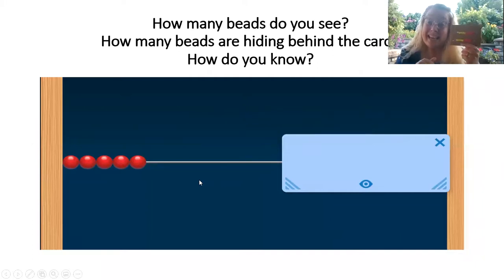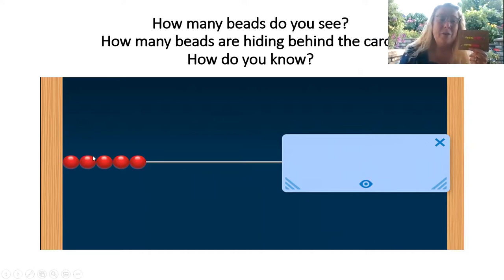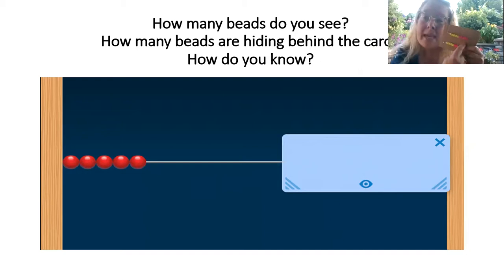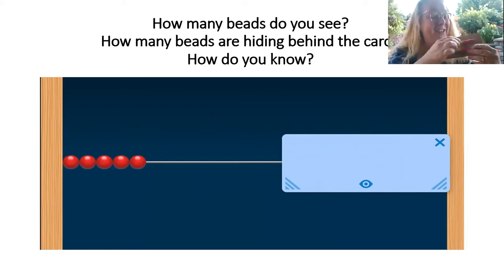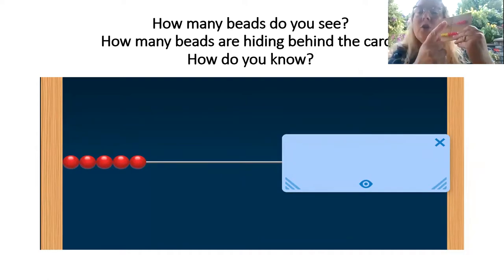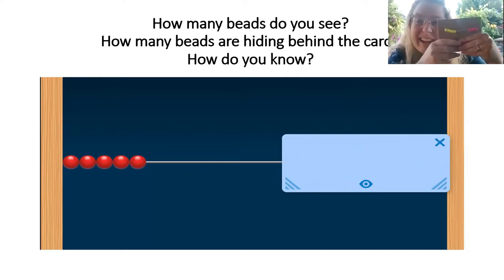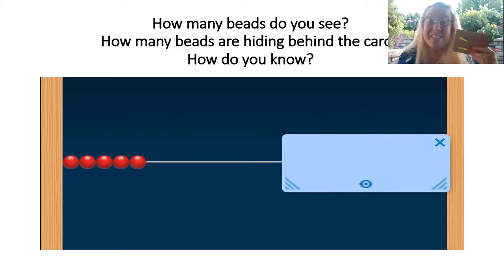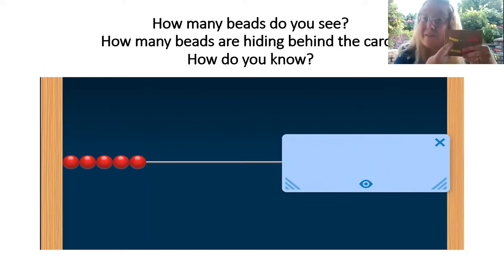How many beads do you see in the picture? Take a look. One, two, three, four, five. Yeah, I see five beads in the picture. I'm going to make my number rack match the number of beads in the picture. Can you do that with me? Let's do it. One, two, three, four, five. Five beads. So if I have five beads showing, how many beads are hiding behind the card? Five. That's right. So one number combination to 10 is five and five.